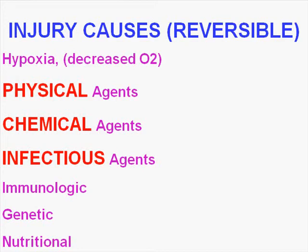There are other causes too — decreased oxygen or hypoxia, decreased nutrients, immunologic causes, genetic causes, nutritional causes. Not that these are completely separate categories, but if you like to think in terms of three, the main ones are physical, chemical, and infectious.